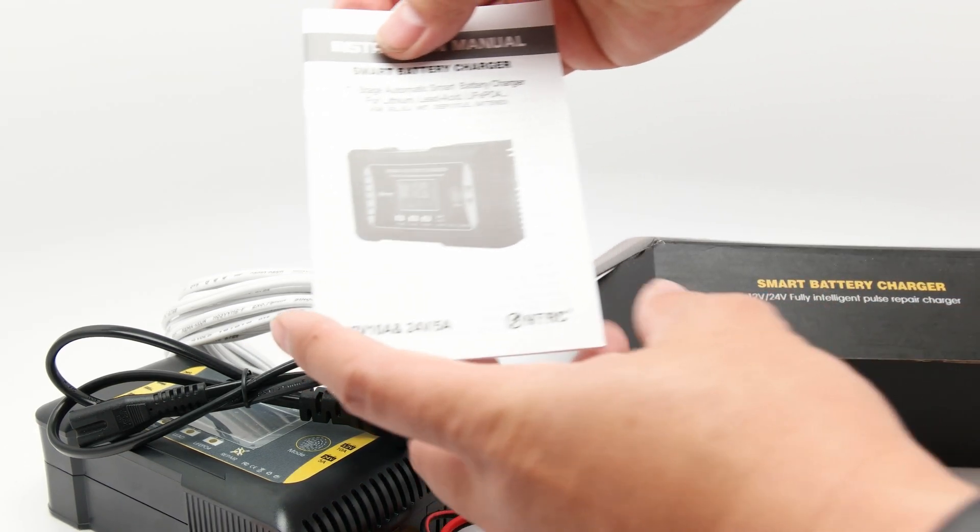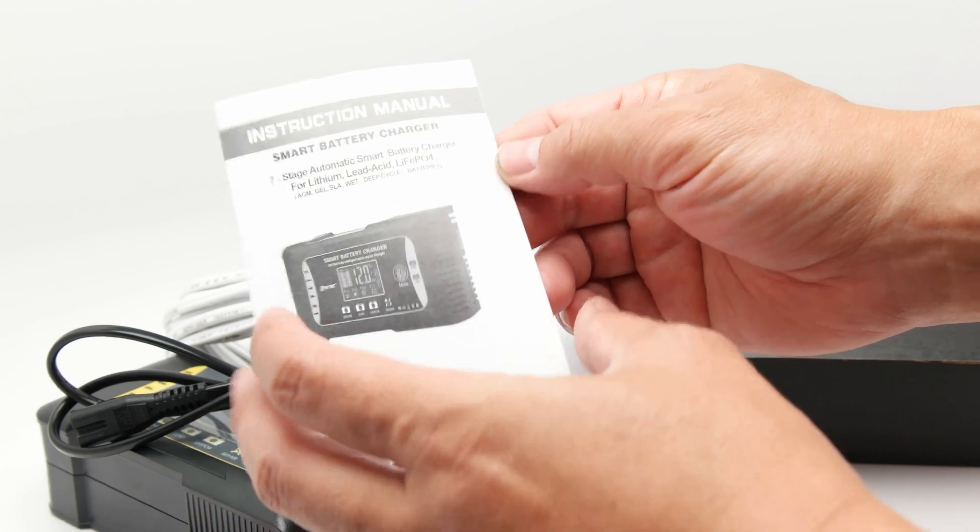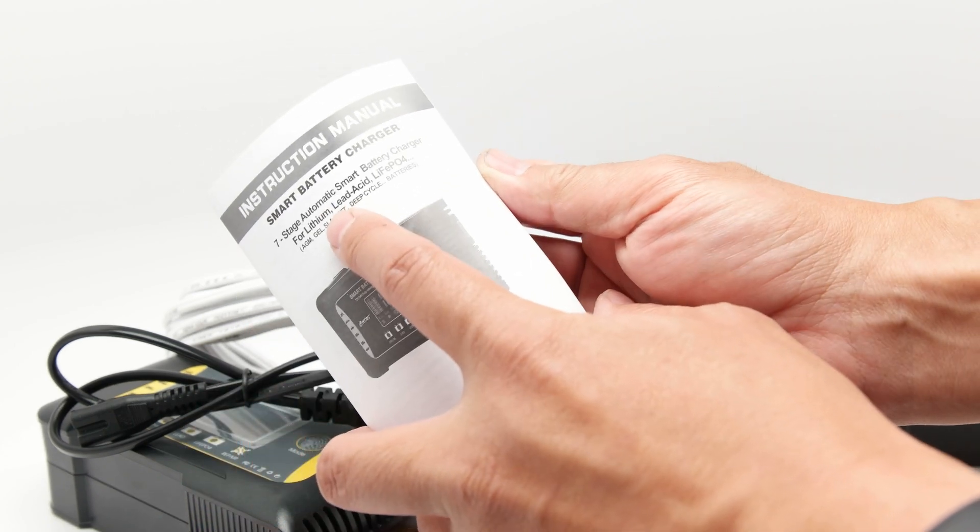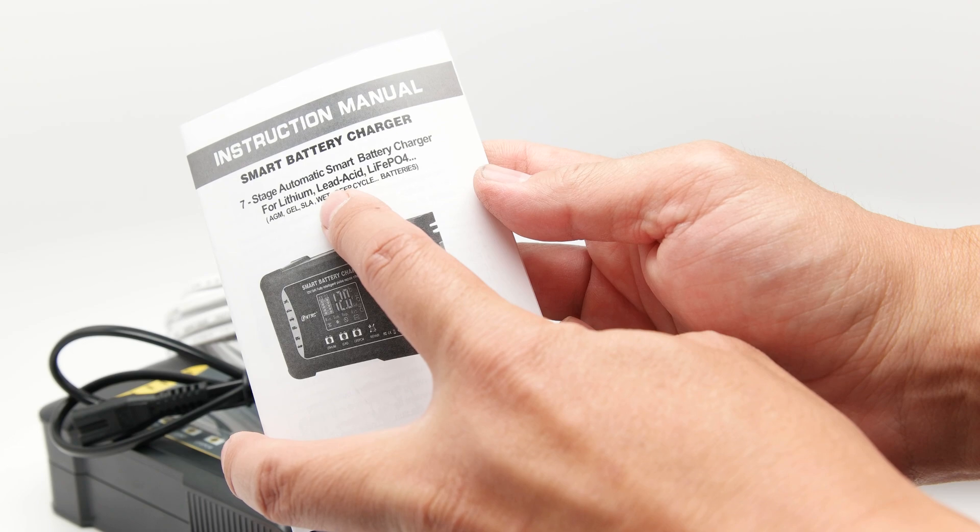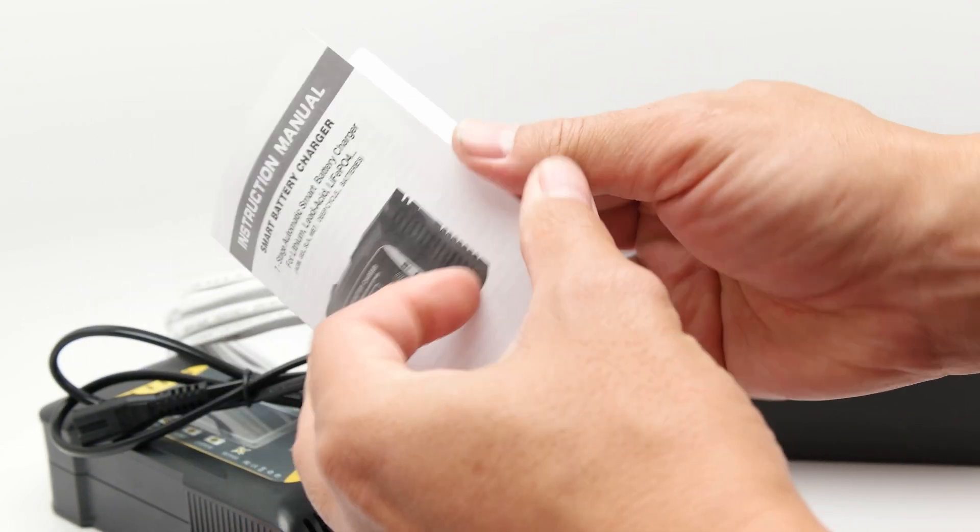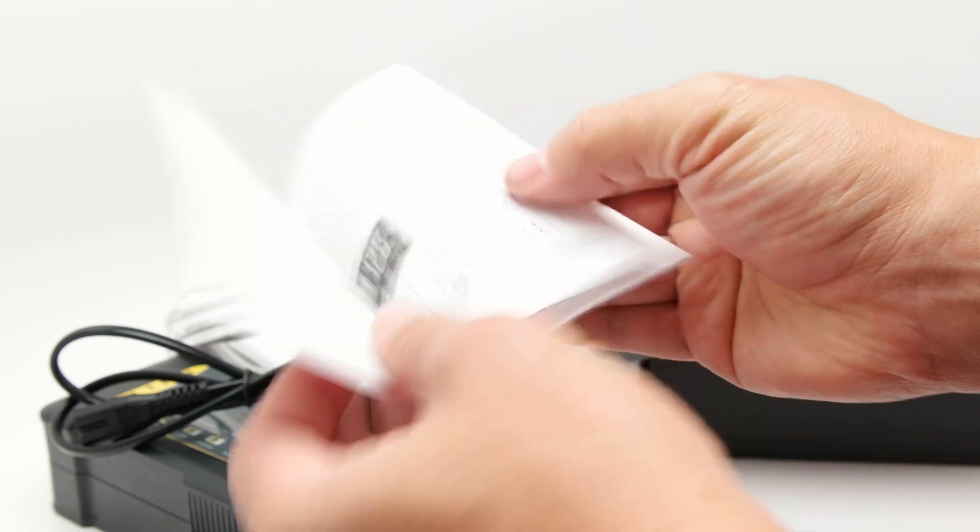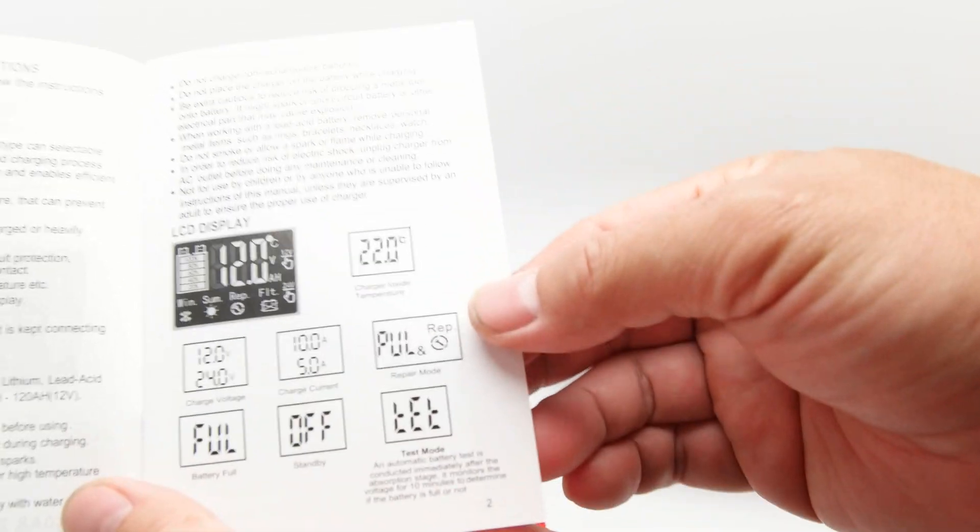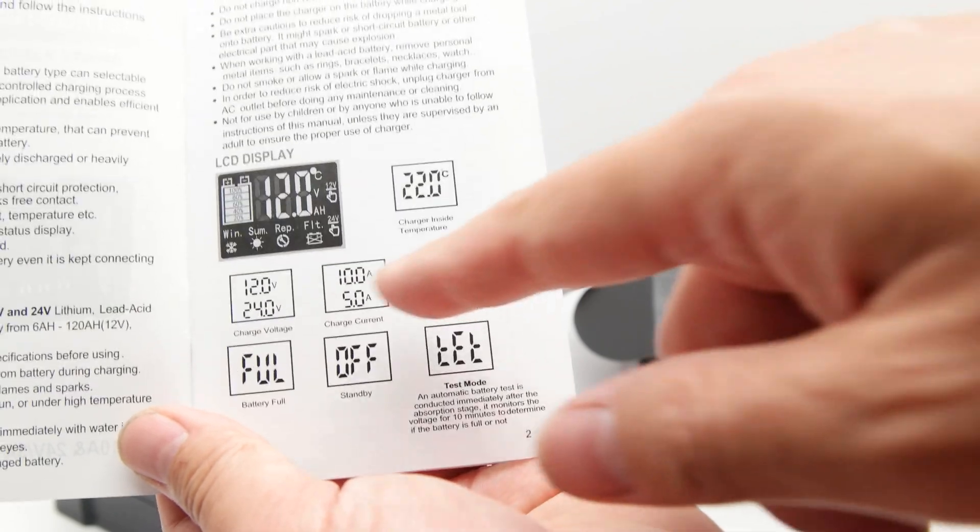Anyways, there is a little instruction manual. It says for AGM gel SLA wet deep cycle batteries. And it tells you some of the functions on here, the LCD display functions. Okay. So you can see some of that.